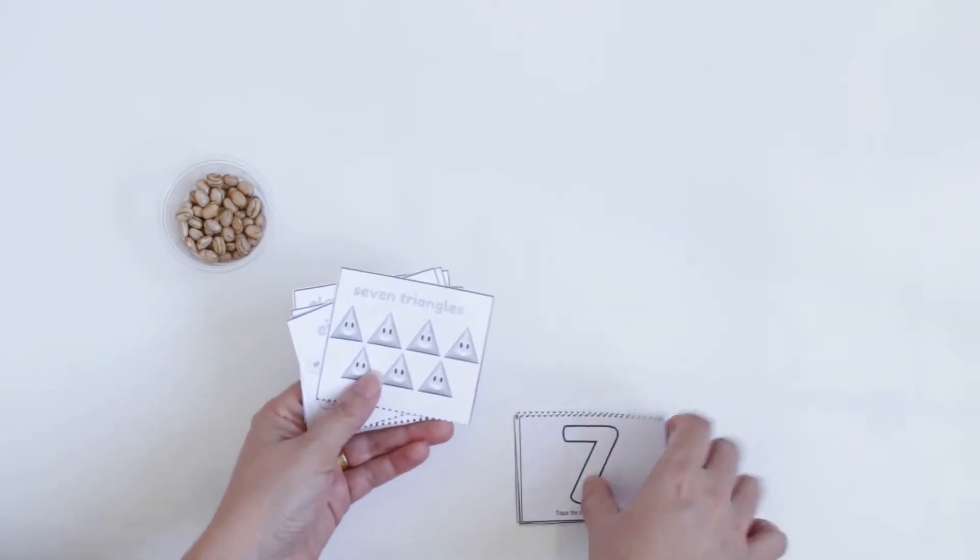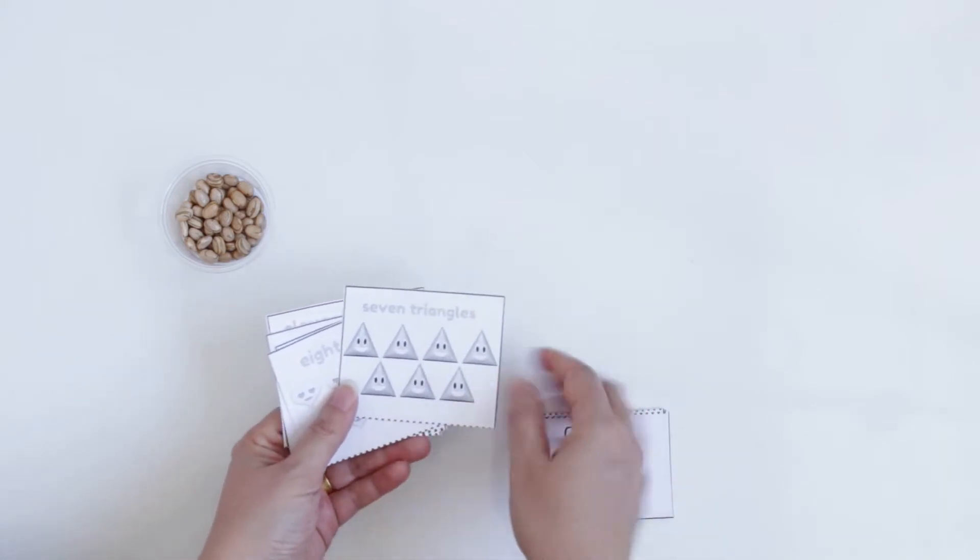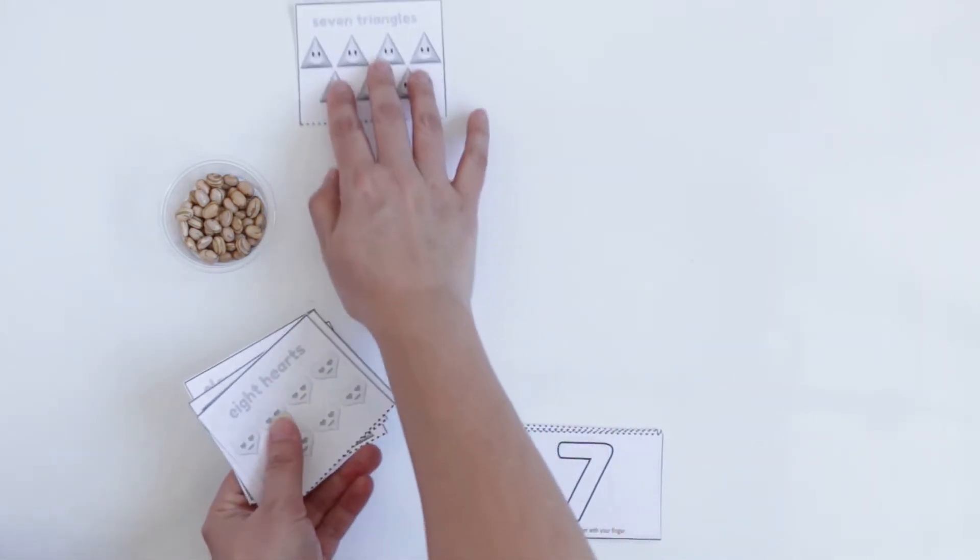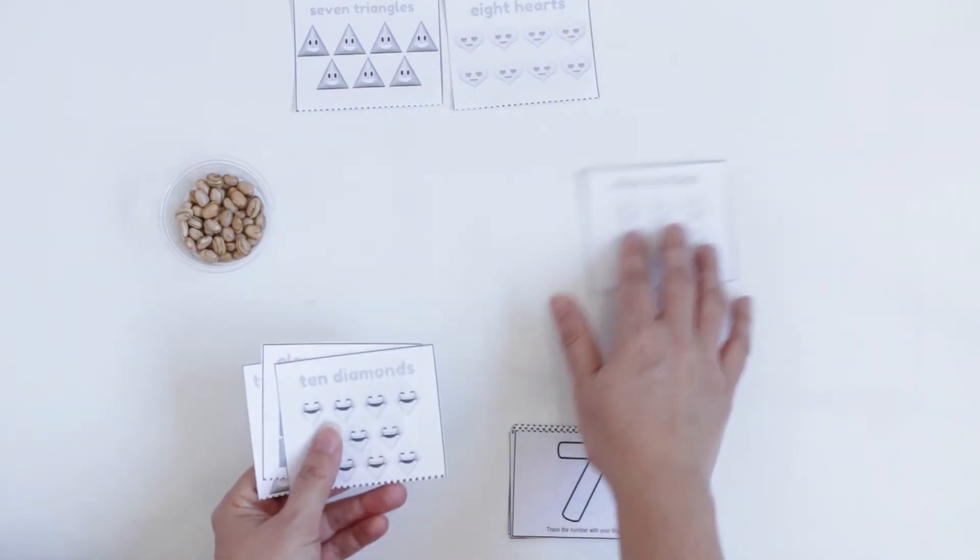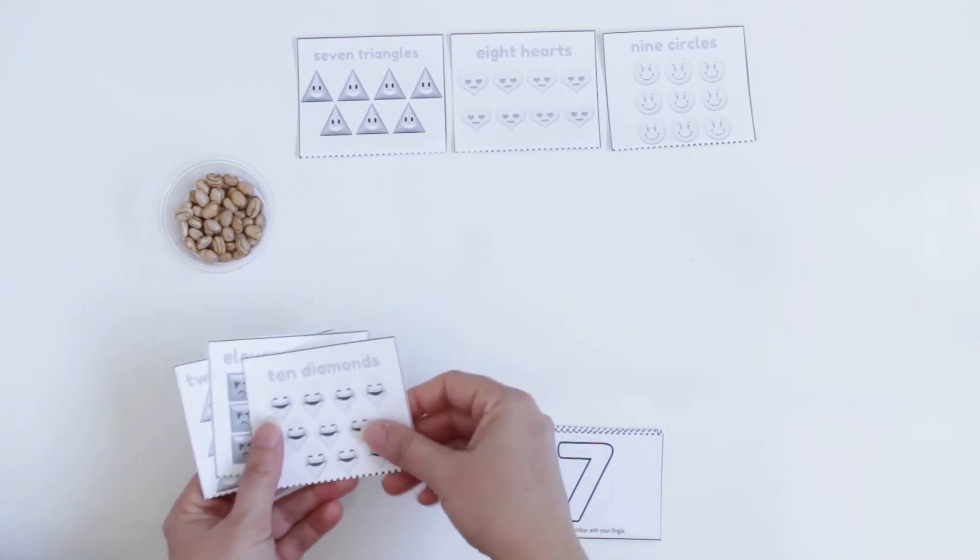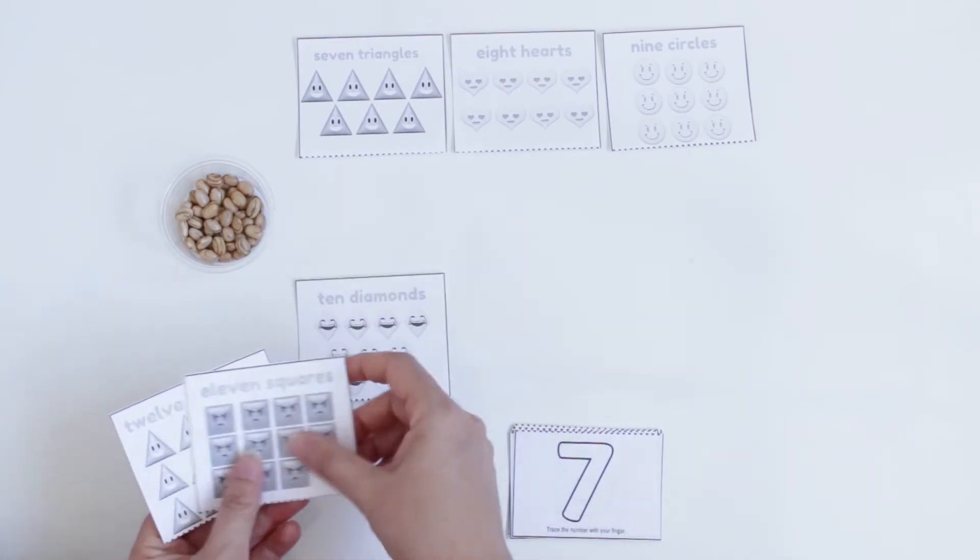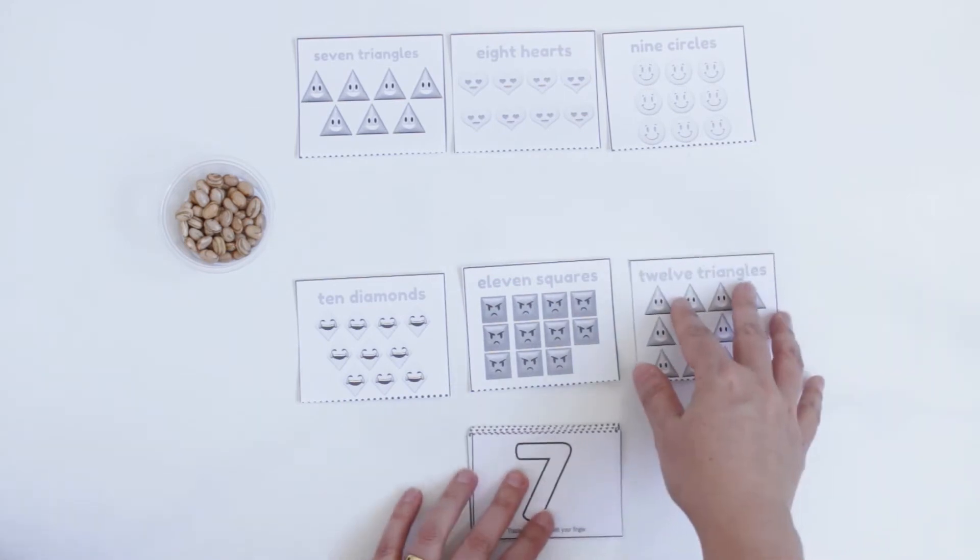We need to organize all the shapes first, so I'm going to put 7, 8, 9, 10, 11, and 12.